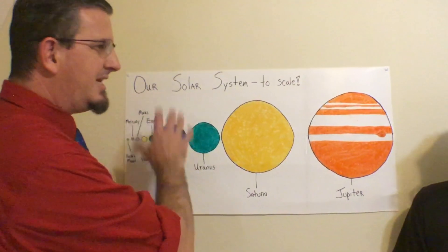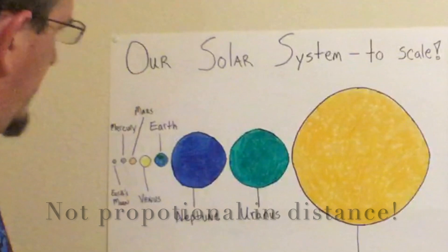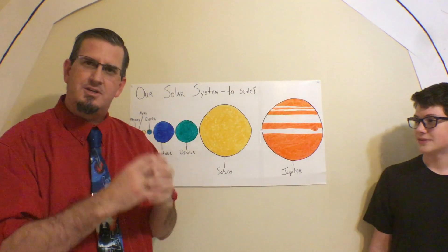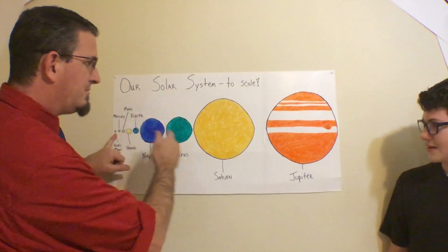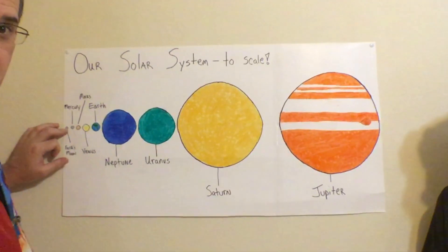So what to scale means is that each planet is proportional in size to one another. So for example, if we took Earth's moon, which is right here and shrunk it down, literally shrunk it down to half a centimeter right here, then all the rest of the planets would be this size, this much larger than the moon.